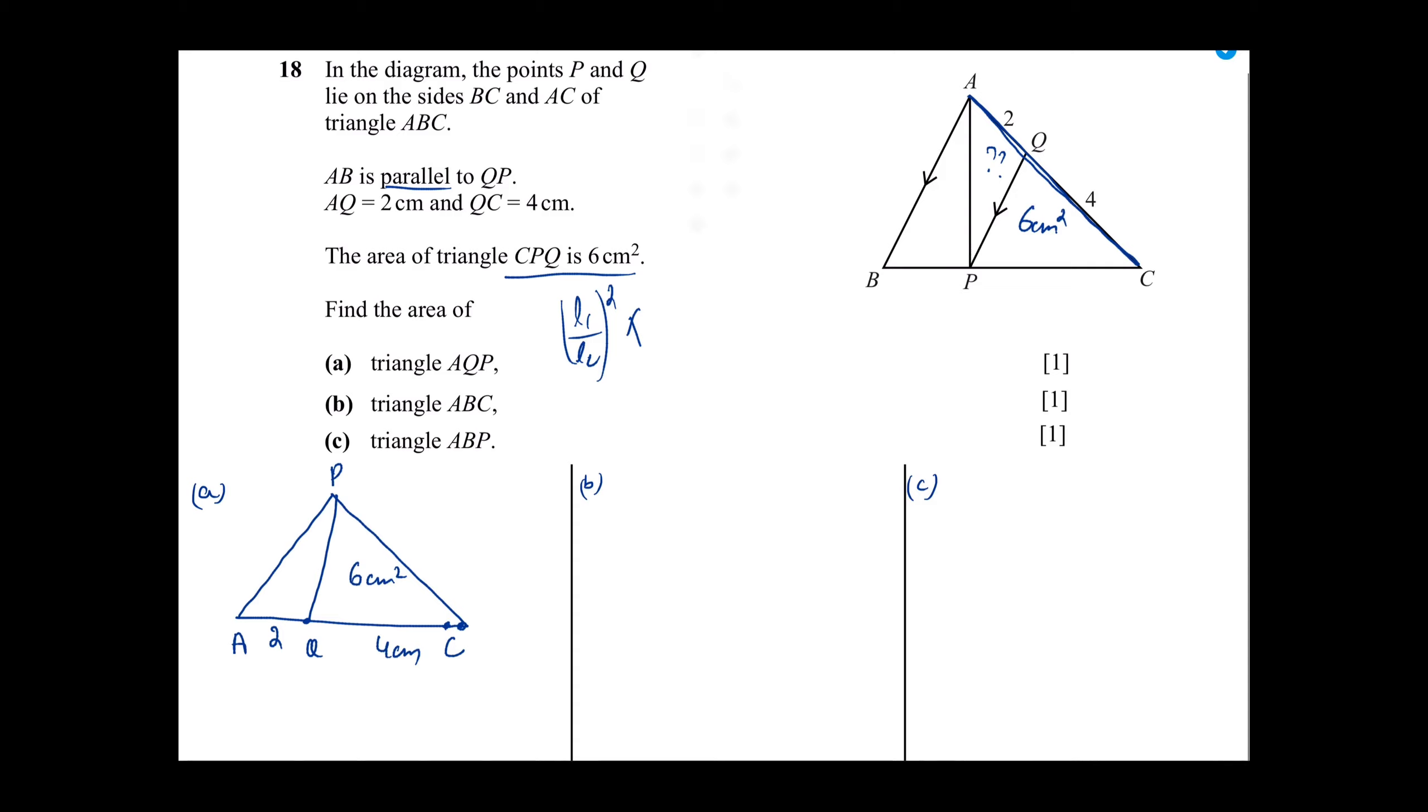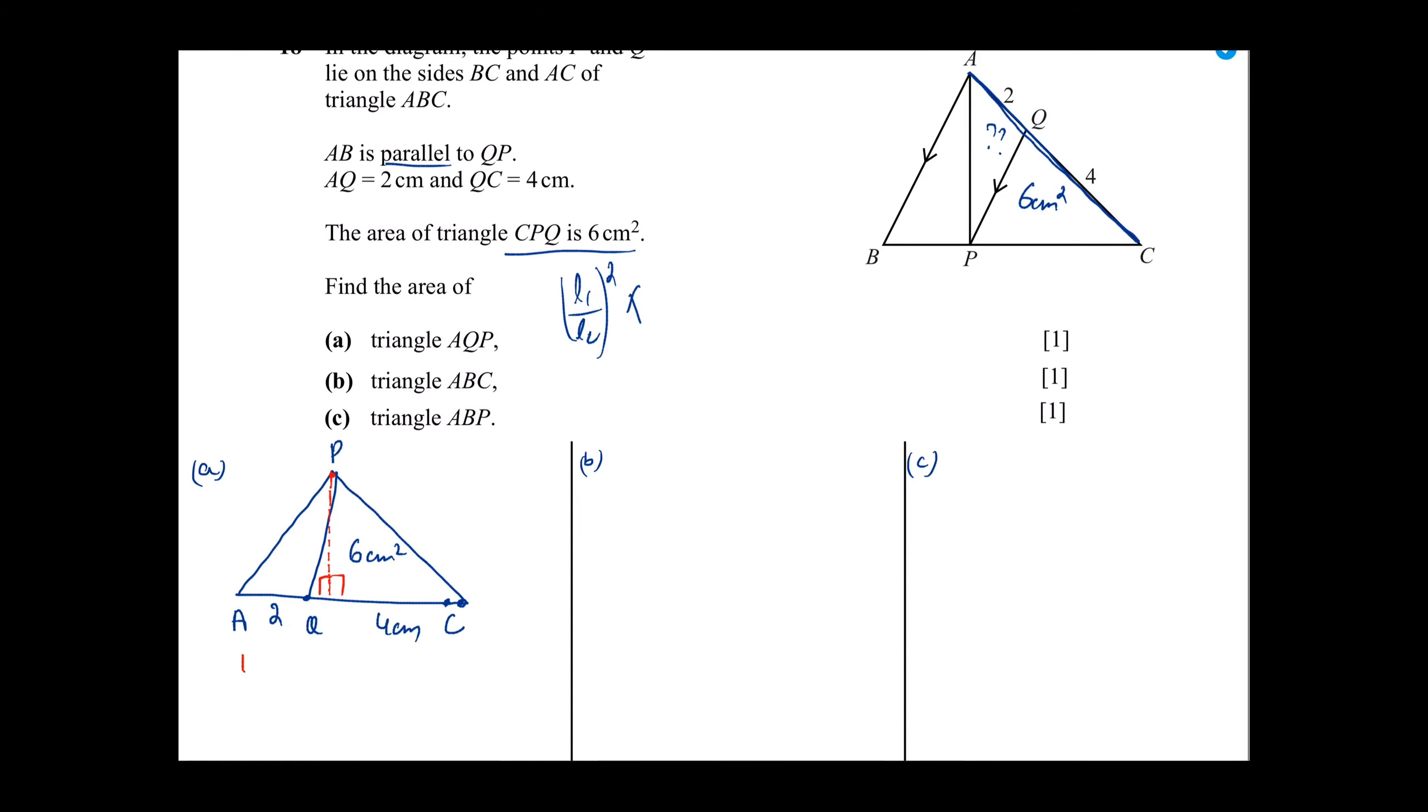These are not similar triangles and not congruent triangles. However, they do share something and that is that they both have the same height. Now, let's say that I want to find AQP area. APQ area I will write as 1 upon 2 into base into the height. I don't know the height but I know the base. So I will put down CPQ area. I will put down PQC area which I will write as 1 upon 2 into 4 into height. AQP is the area we have to find and CPQ is the area which is 6cm².